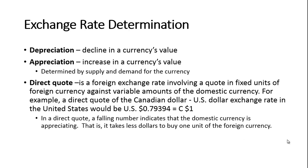There are two ways to quote exchange rates. There's the direct quote, which involves a quote in fixed units of the foreign currency against variable amounts of the domestic currency. For example, a direct quote of the Canadian dollar/US dollar exchange rate in the United States would be .79394 US dollars equals one Canadian dollar. So the Canadian dollar is the fixed quantity at one.